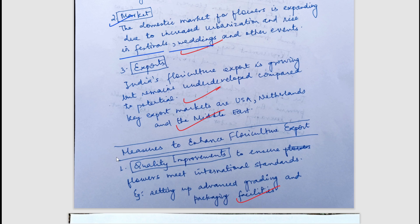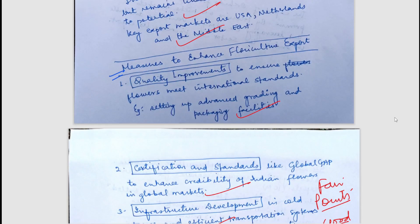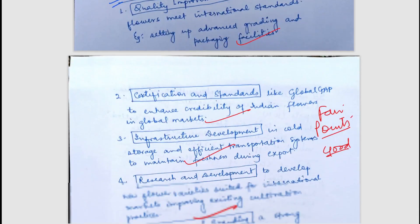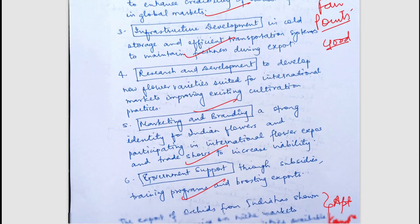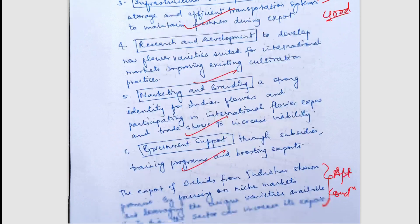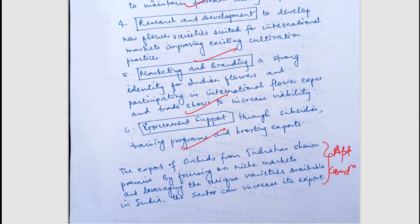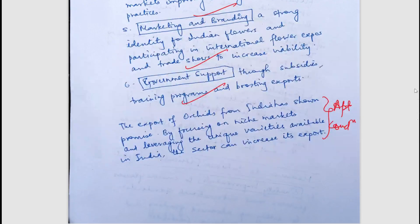Exports were also discussed — how India can export to different countries. Measures suggested included quality improvement, certification standards, infrastructure development, and research and development. This was a fairly written answer. You can pause the video and read it in detail.